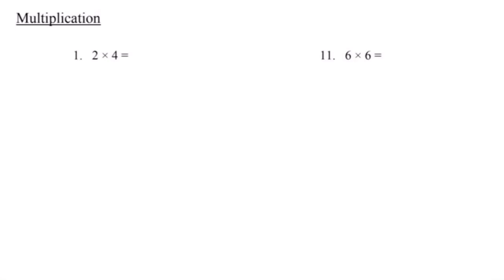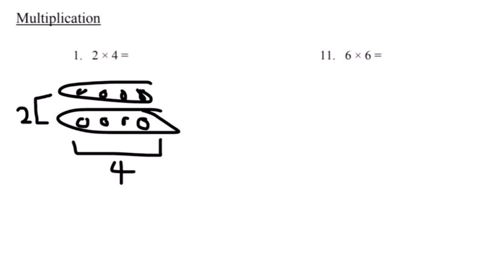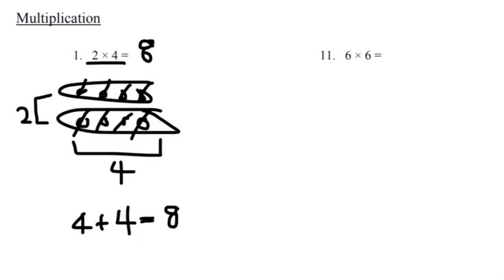Third topic is multiplication, and it's asking us to multiply the numbers below. They give us the equation 2 times 4. 2 times 4 can also be referred to as two groups of 4, and there are two ways to solve this. One, we can draw it out — two groups of 4 circles. Counting all circles together gives us 8. Therefore, 2 times 4 equals 8. Another way to solve this is through addition: 2 times 4 can also be written as 4 plus 4, and 4 plus 4 equals 8. So two groups of 4 and 4 plus 4 both equal 8.